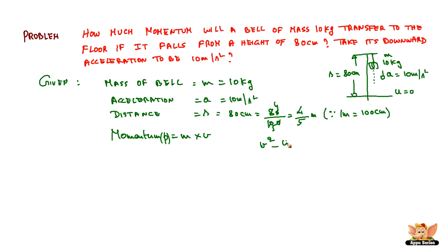From the equation of motion, v square minus u square is equal to 2as. We need to find v, u is 0, 2 into a is 10, s is 4 by 5. So v square becomes 16, v is 4. Now taking v as 4, we get the momentum as m is 10, v is 4 meter per second. This is 40 kg meter per second. So the momentum experienced by the floor by the falling ball is 40 kg meter per second.